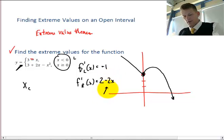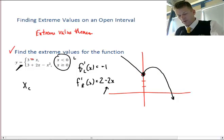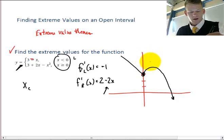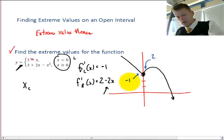So when I plug 0 into this function, I see that I have a slope of, I'll do this in blue, I have a slope of 2.